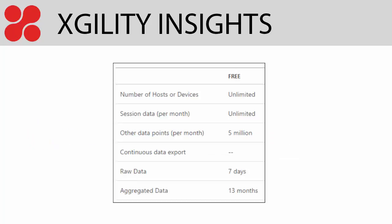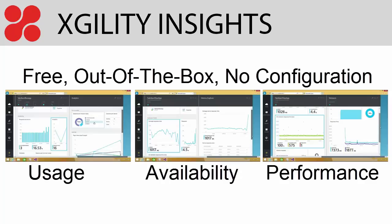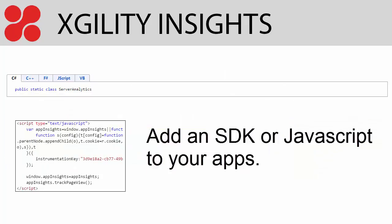Application Insights offers a free tier with plenty of reporting power to get you started. Without any manual configuration, Application Insights provides a dashboard that displays information about the usage, availability, and performance of your apps. To begin collecting information, all you have to do is include a small SDK into your application code or a JavaScript snippet onto your web pages. Once you've done that, information will start being collected almost immediately.